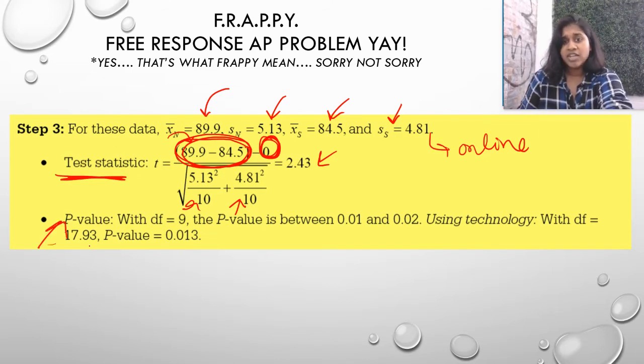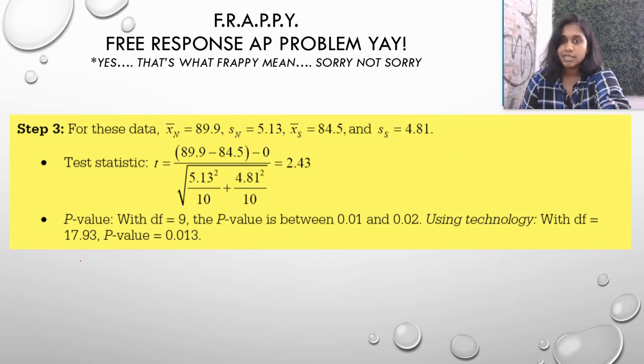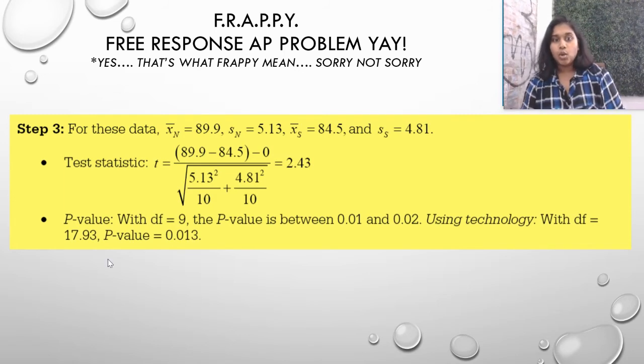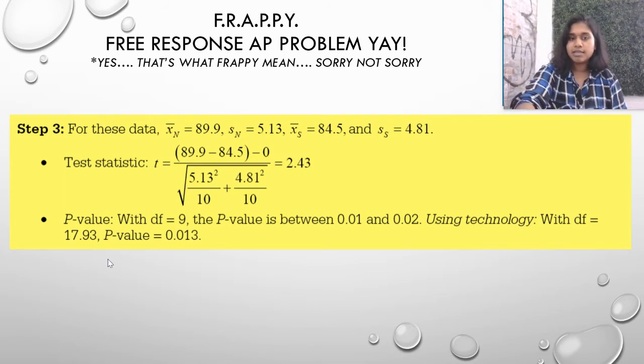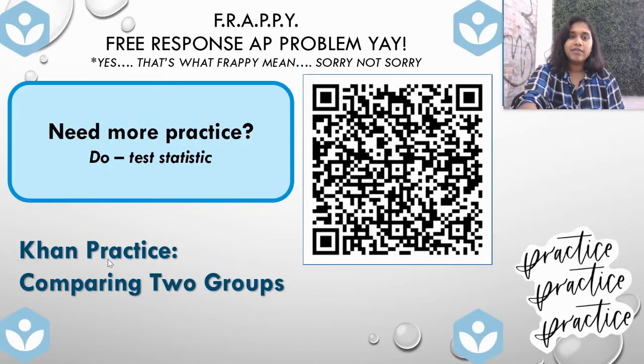The p-value is easy enough. You use tech or you use the table, you go calculate it, make sure you're using the correct degrees of freedom. In this case, n minus 1 is 9, so that's nice and easy. So we end up with the p-value of 0.013, which is less than 0.05.